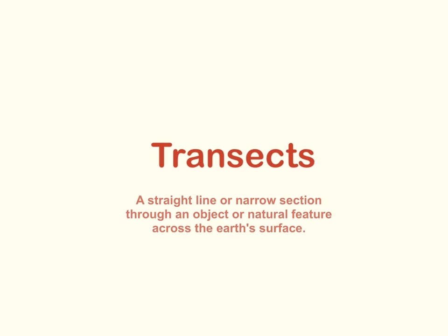G'day and welcome to a quick instructional video on how to do transects. A transect is simply a straight line or narrow section that goes through an object or natural feature across the earth's surface. Usually we see them on maps.